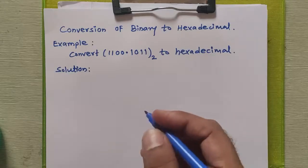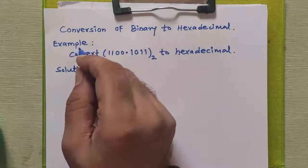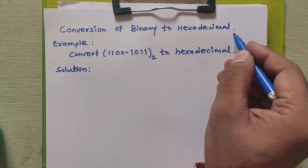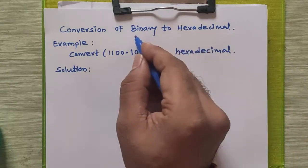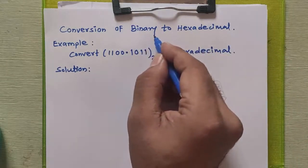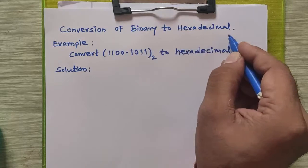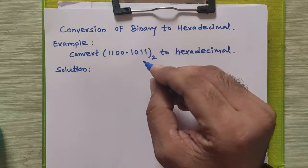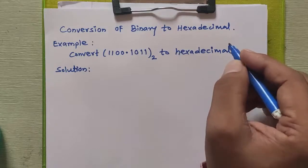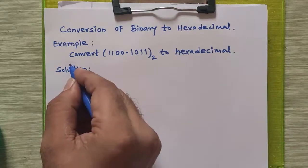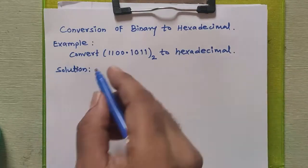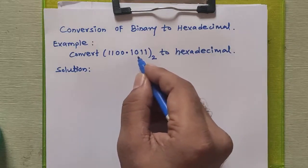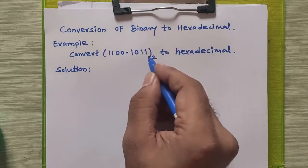Hello friends. In this tutorial, we are going to study how to convert any binary number to a hexadecimal number. As we know, the base of a binary number is 2, whereas the base of a hexadecimal number is 16. So we are going to convert a base-2 number to a base-16 number. The given number is 1100.1011 in binary, and we are going to convert it into hexadecimal.